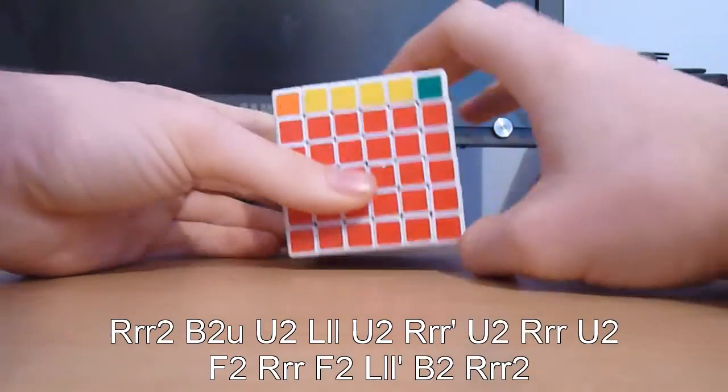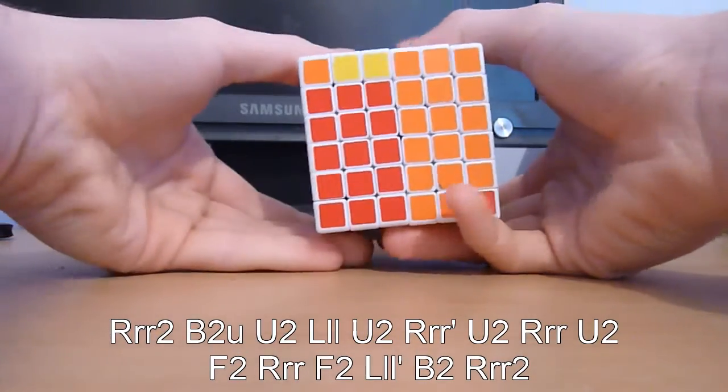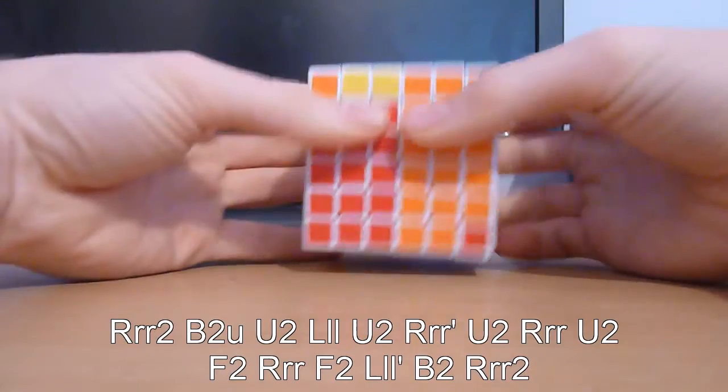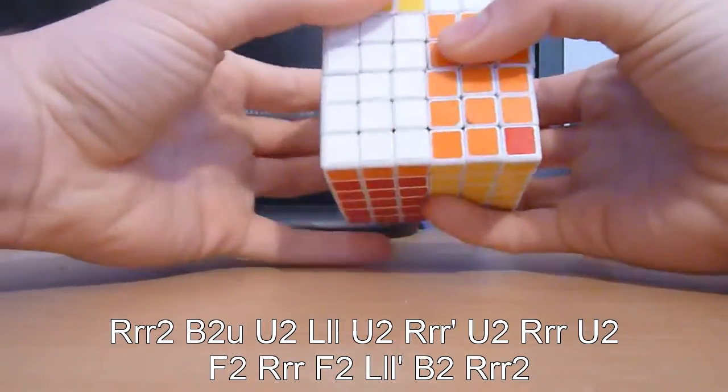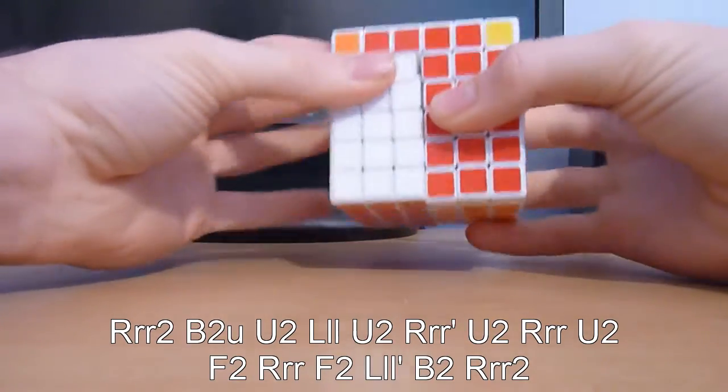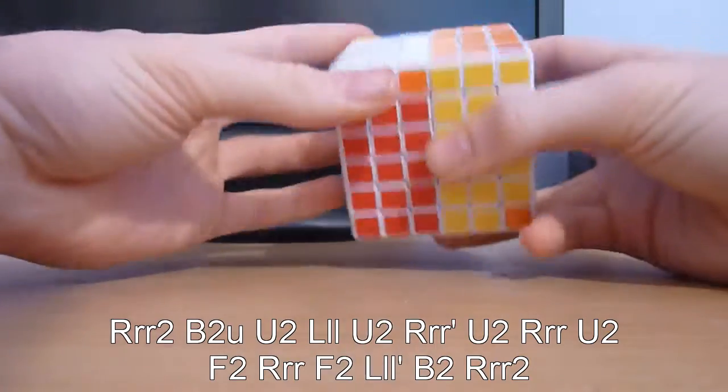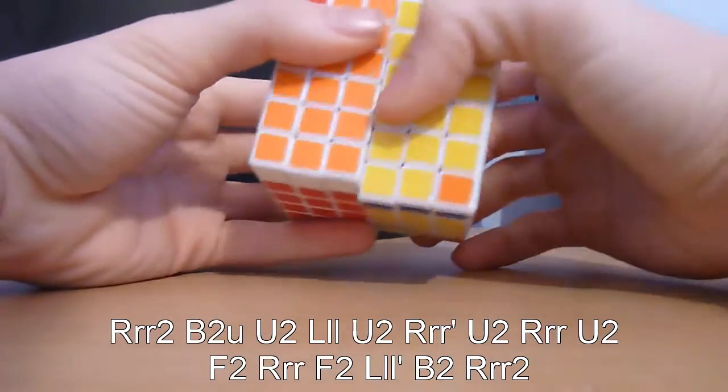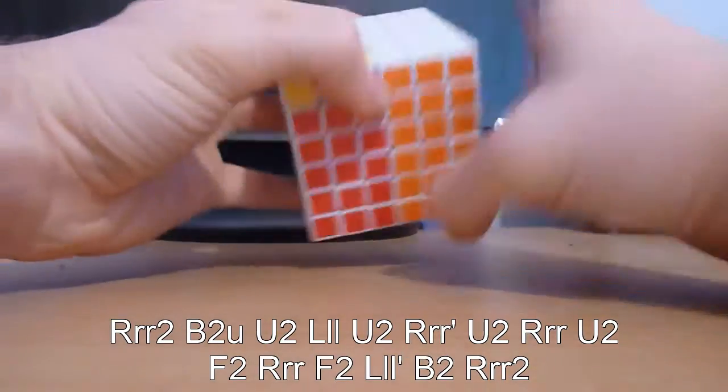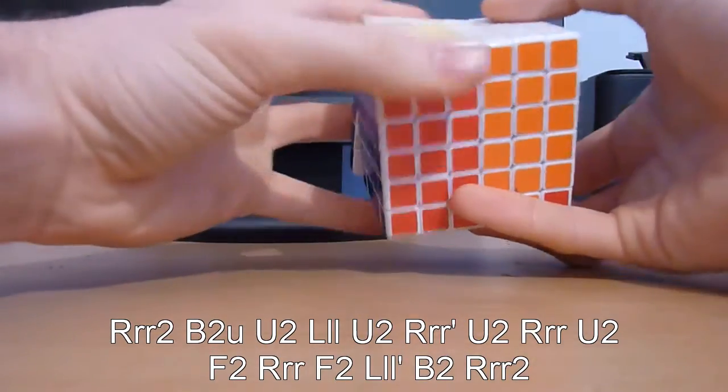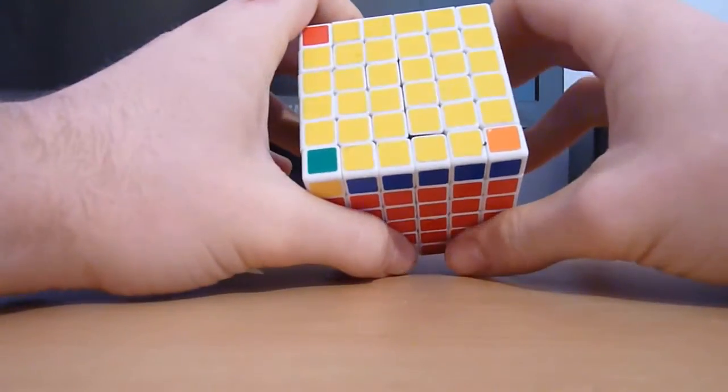Then do the algorithm triple R2 B2 U2 triple L U2 triple R' U2 triple R U2 F2 triple R F2 triple L' B2 triple R. That'll flip the edge.